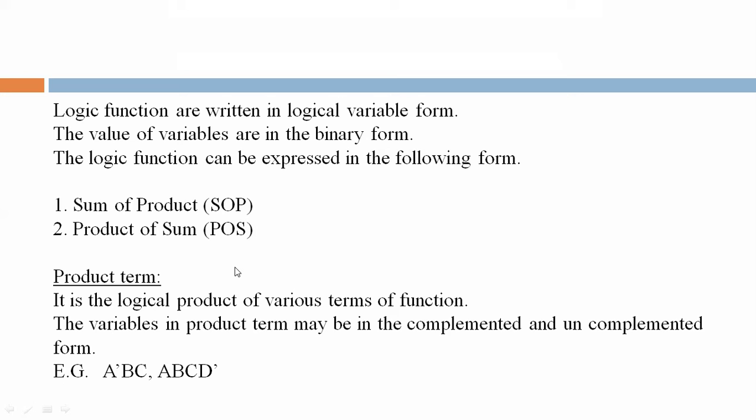Product terms: It is the logical product of various terms. The variable in product terms may be in the complemented and uncomplemented form. For example: A dash B C, or A B C D dash. Means complement (with dash) and uncomplemented (without dash) form.